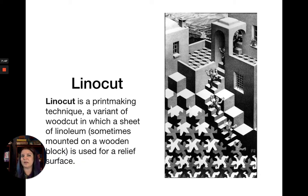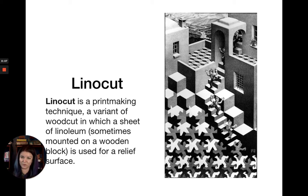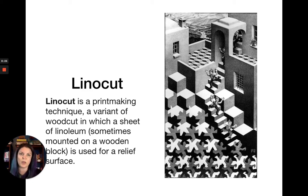Linocut is the last kind of relief printing we'll cover, and you may have done this in school—it's fairly common because the materials are more accessible. Linocut is a printmaking technique and a variant of woodcut in which a sheet of linoleum, sometimes mounted on a wooden block, is used as the relief surface. The process is exactly the same as woodcut, but instead of carving into wood you're carving into a block of linoleum. This example is a linocut by M.C. Escher, a fairly famous surrealist.